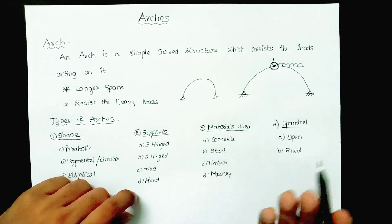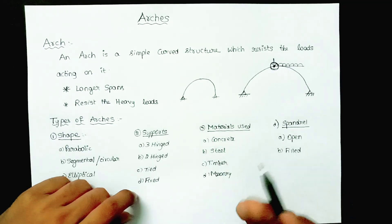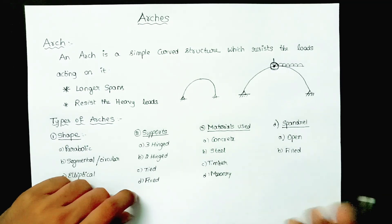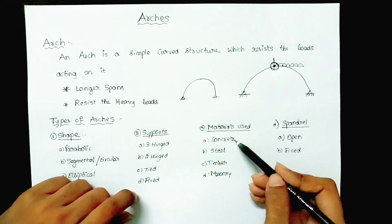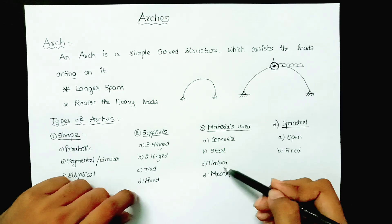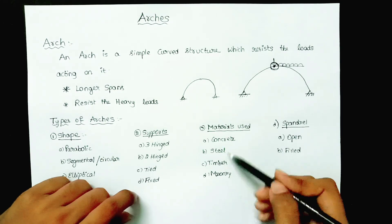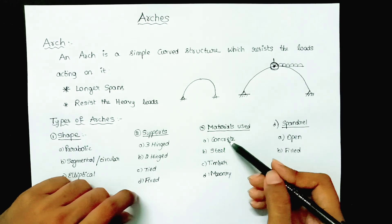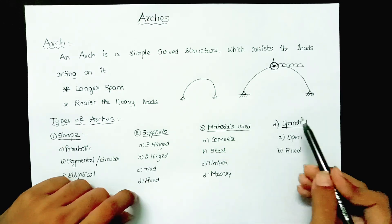Coming to the materials used, an arch can be constructed with any of the following materials: concrete, steel, timber, or masonry. Mostly it is constructed with concrete and steel.